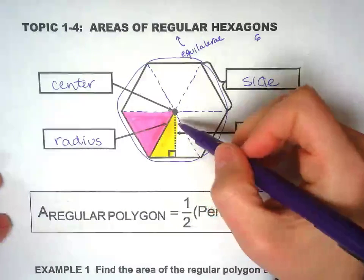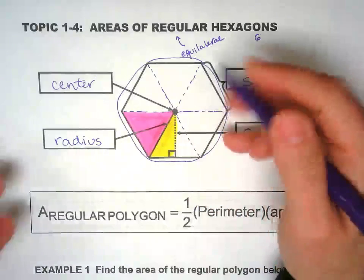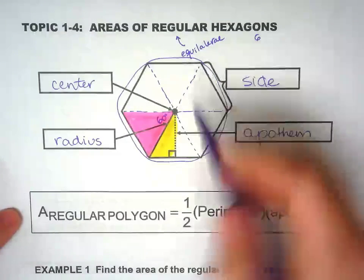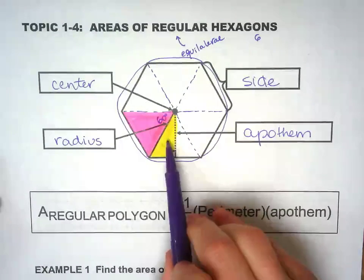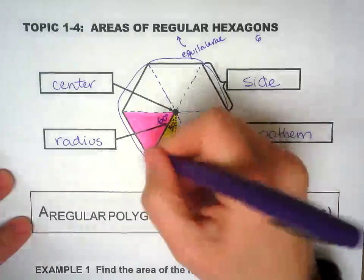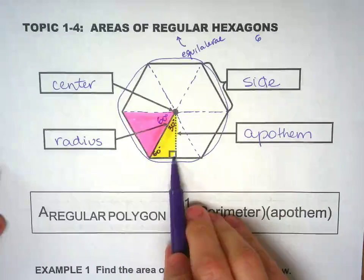Central angle is 360 degrees. If we divide by six, because we have six triangles, we get 60 degrees each. Since the yellow triangle is half of the pink triangle, this angle right there is 30. The other one has to be 60 because this one is already 90.